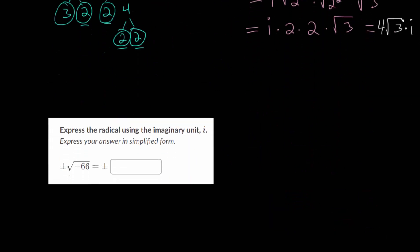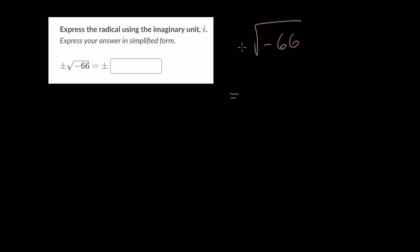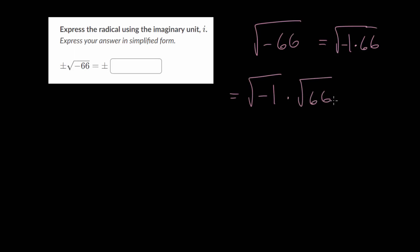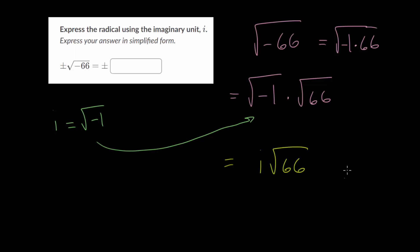Let's do another example problem. We have the square root of minus 66. First, we need to get the negative out of the square root, so we separate this into the square root of minus 1 multiplied by 66. Since we have a product, we can break it up into a product of two square roots, and i is just the square root of minus 1. So we get i multiplied by root 66. Let's see if we can simplify the square root of 66 by making a factor tree.